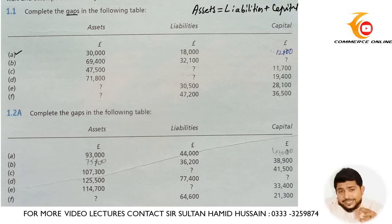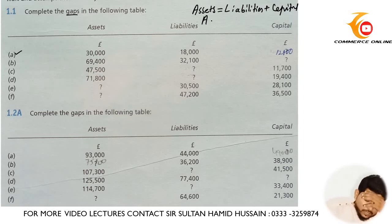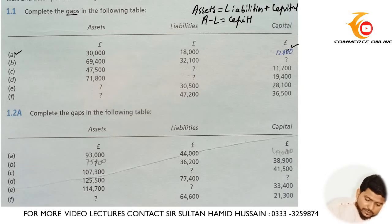In order to find out capital, you need to minus liabilities from assets and you will get capital. So when we deduct liabilities from assets, that is 30,000 minus 18,000, we get capital of 12,000.